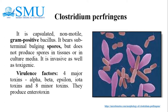Clostridium perfringens produces four major toxins — alpha, beta, epsilon, and iota — and also produces a heat-labile enterotoxin. Neuraminidase, histamine, and the bursting factor produce muscle lesions, while the circulating factor inhibits phagocytosis.